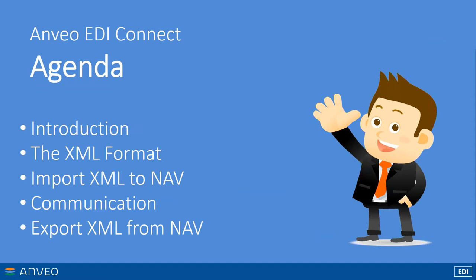Today's agenda is a short introduction into Enveo EDI Connect, a very brief explanation of the XML file format. We will look at setting up mapping in Microsoft Dynamics NAV to import XML data, a quick look on how to set up the communication part, how to receive files from the file system, how to export data from NAV to the file system, and how to use data from NAV and export it to an XML file.